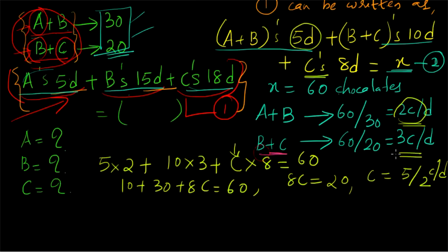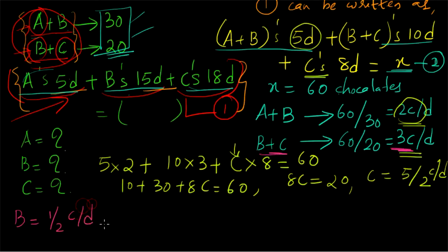B+C together consume 3 chocolates per day, and C alone consumes 5/2 = 2.5 chocolates per day. So B = 3 − 2.5 = 0.5 chocolates per day, which is half a chocolate per day. Similarly, A+B together consume 2 chocolates per day and B consumes 0.5, so A = 2 − 0.5 = 1.5 chocolates per day, or 3/2 chocolates per day.